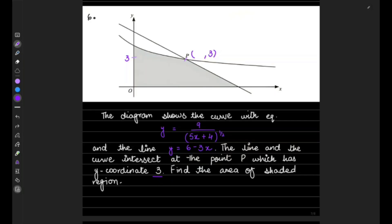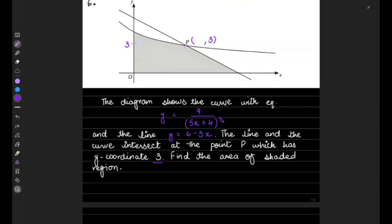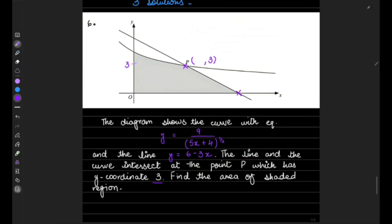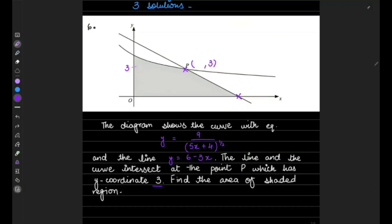We need to find the area of the shaded region by integrating between limits on the x-axis. First, we need to find the key points. For the x-intercept of the line — call it Q — the line intersects the x-axis where y = 0. So in the equation of the line y = 6 − 3x, we substitute y = 0 to get the x-intercept.